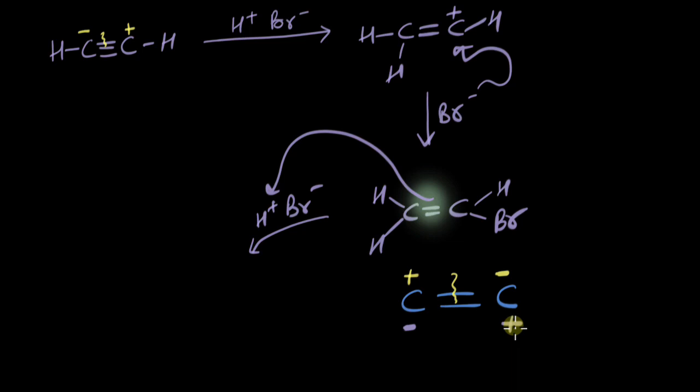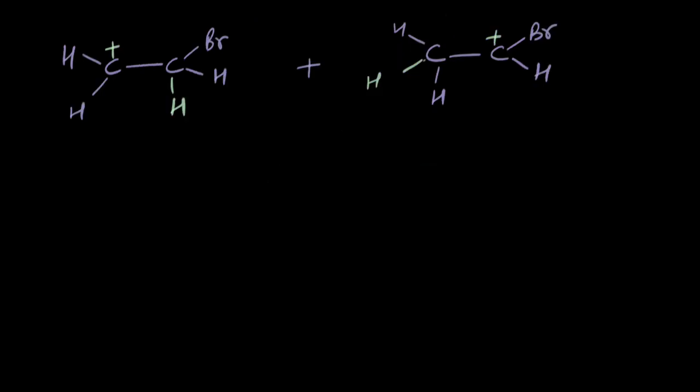Let's draw the result of both the possibilities. So we either get this carbocation or this carbocation. Which one is more stable? Let's find out. So these are the two carbocations that may form. What do I see here? Well, in the left one there is a one degree carbocation and here it is again a one degree carbocation.